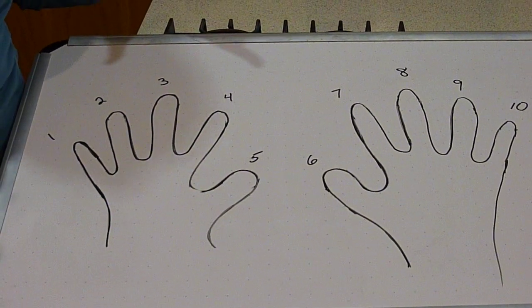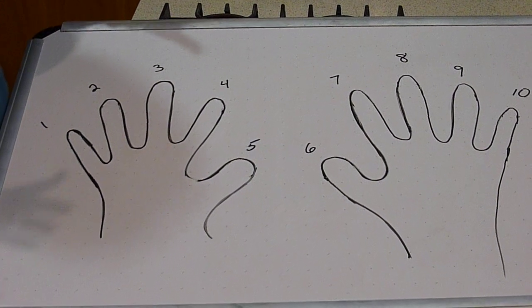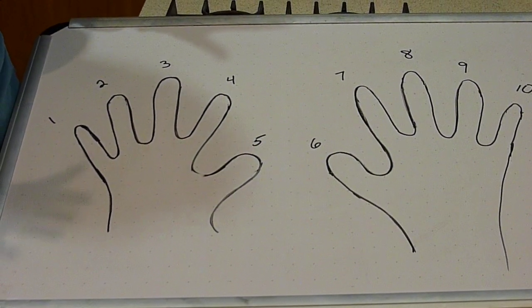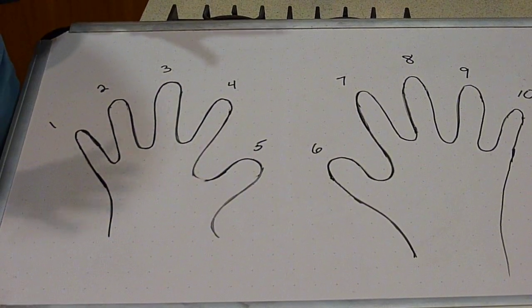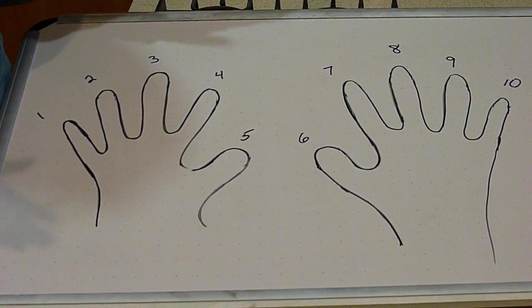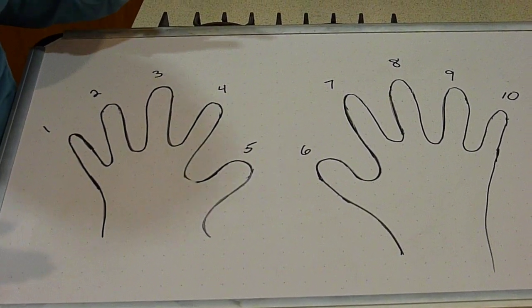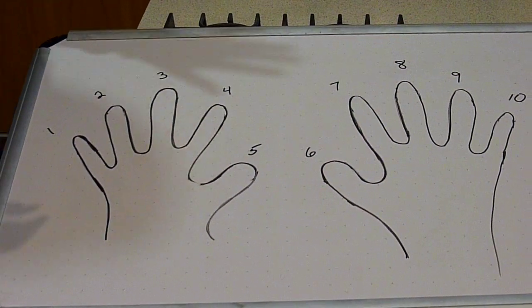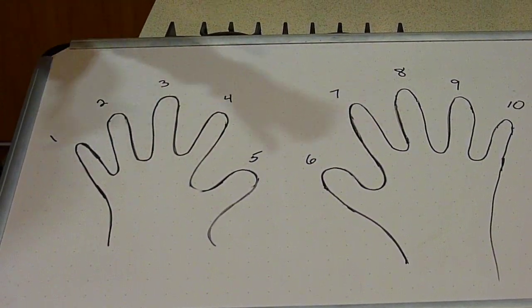And if I'm working with a whole class, I can have everybody hold up their fingers and I'll say, okay, wiggle your ninth finger, and I can quickly check and make sure everyone in the class knows what finger is number nine. So this is the first thing I do.